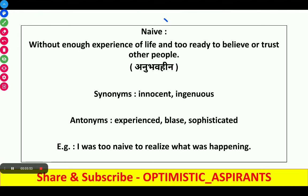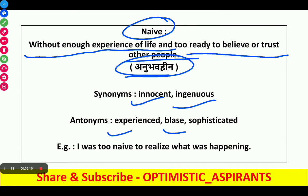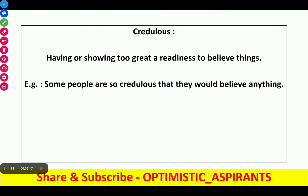Next word is naive. It means without enough experience of life and too ready to believe or trust other people. In Hindi it is 'anubhavheen'. Synonyms are innocent or ingenuous. Antonyms are experienced, blase, or sophisticated. Example: 'I was too naive to realize what was happening.'